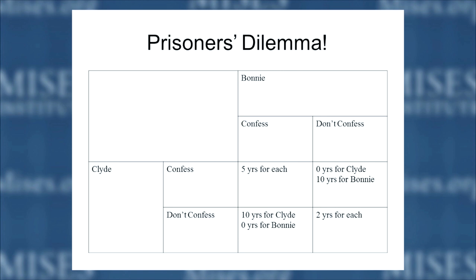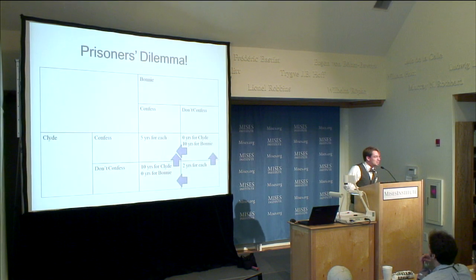We think about the incentives Bonnie and Clyde have for confessing. They're in separate rooms and can't collaborate. Clyde reasons: if Bonnie confesses, I'm better off confessing — five years instead of ten. If Bonnie doesn't confess, I can walk free by confessing rather than serve two years. So regardless of what Bonnie does, confessing looks better. Bonnie faces the same incentives. All the arrows point toward both criminals confessing and getting five years apiece.